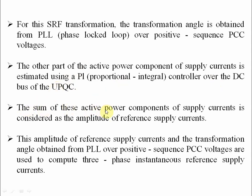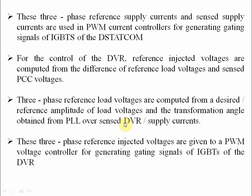The other part of the active power component of supply current is estimated using a PI controller over the DC bus of the UPQC. The amplitude of the reference supply current and the transformation angle obtained from the PLL over positive sequence DC voltage are used to derive the three-phase instantaneous reference supply current. The sensed supply currents and the derived three-phase reference supply current are then used by the PWM current controllers for generating the gating signals for the IGBT switches of the DSTATCOM.